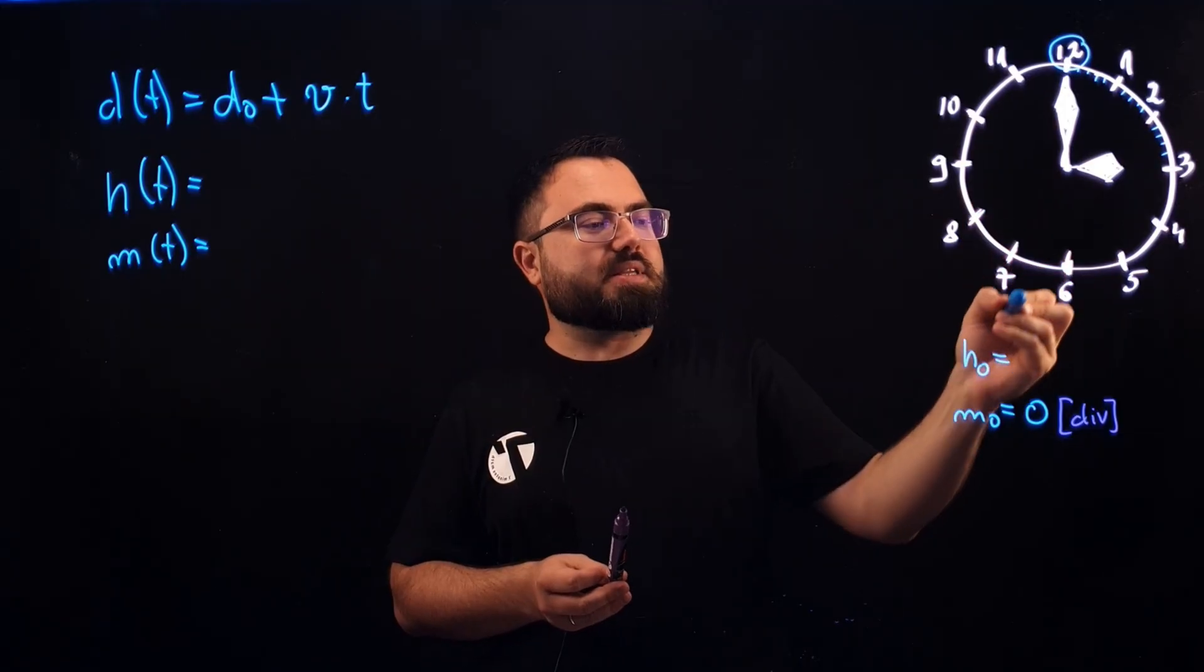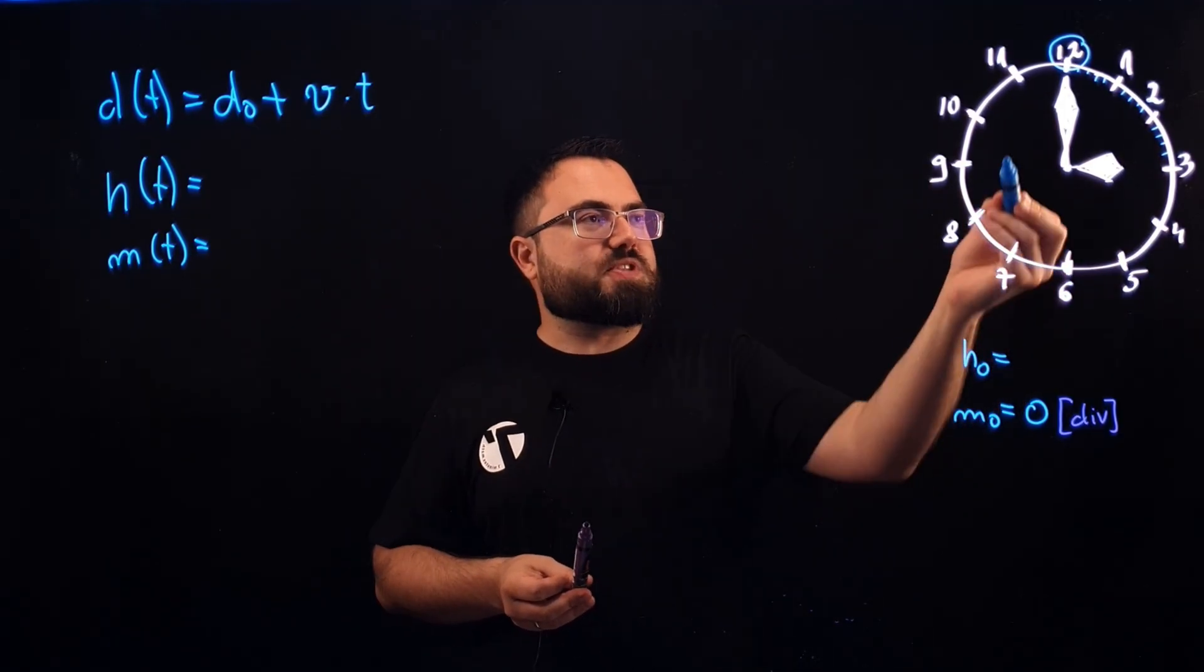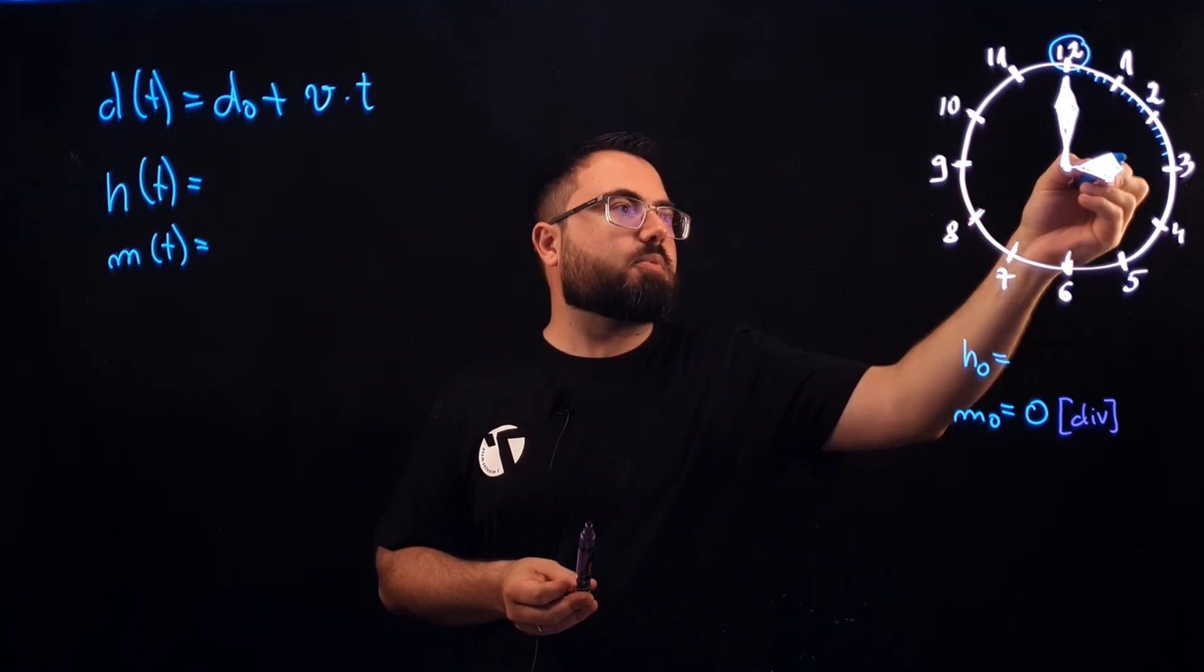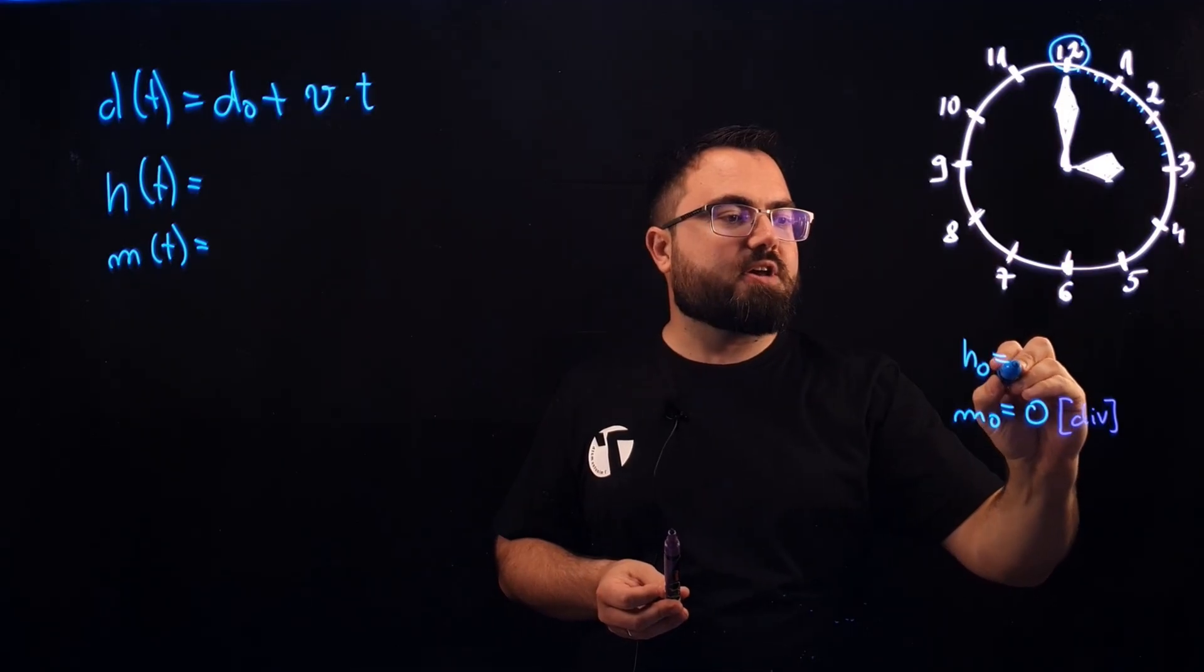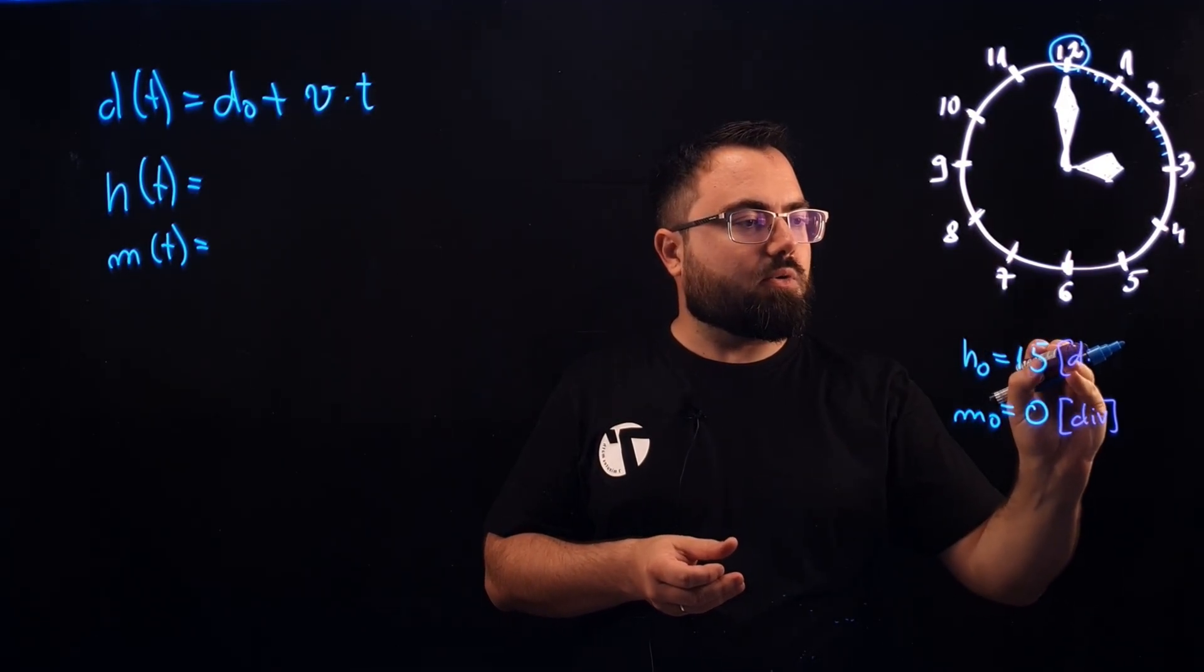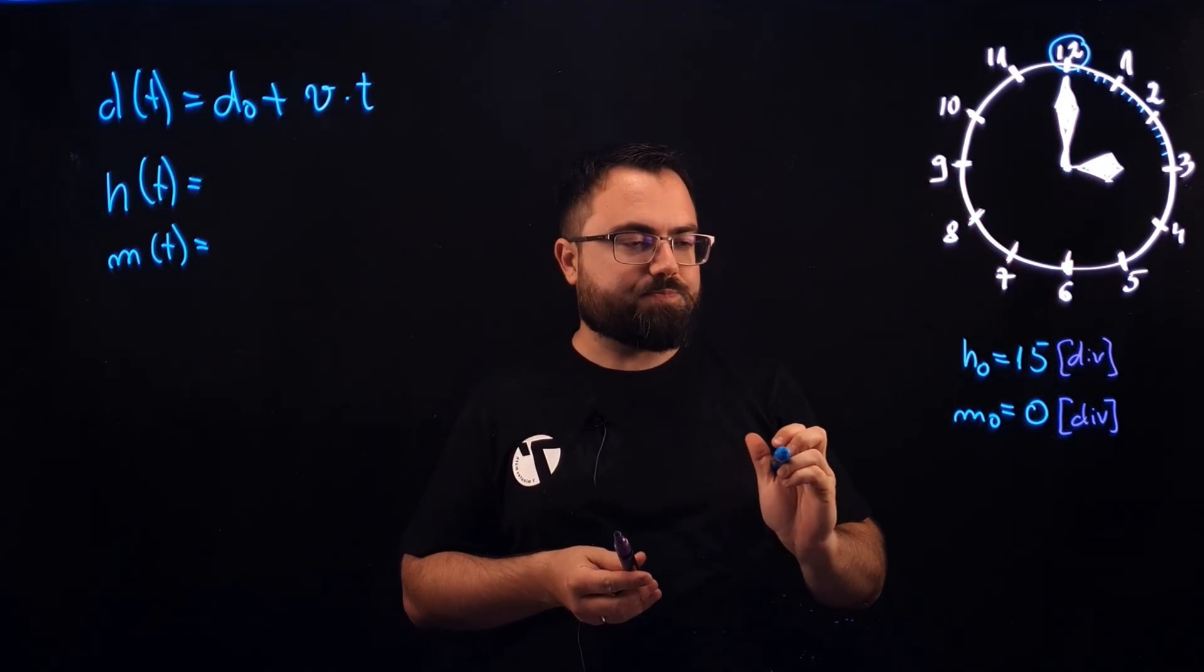For h(0) we have a little bit of offset because the hour hand doesn't start the race from the same place where the minute hand starts. And the h(0) is if you count the number of divisions, it's 15. And the unit here is also divisions.